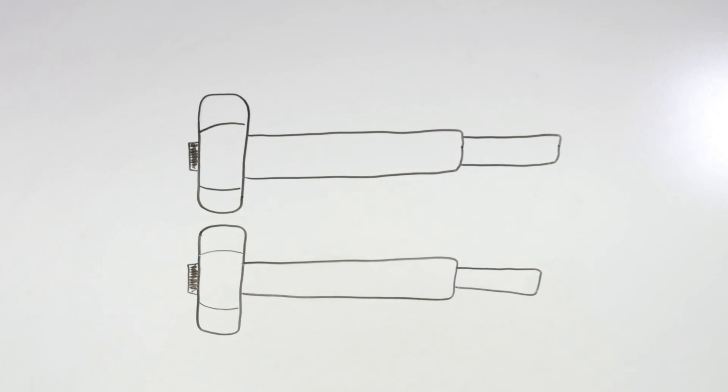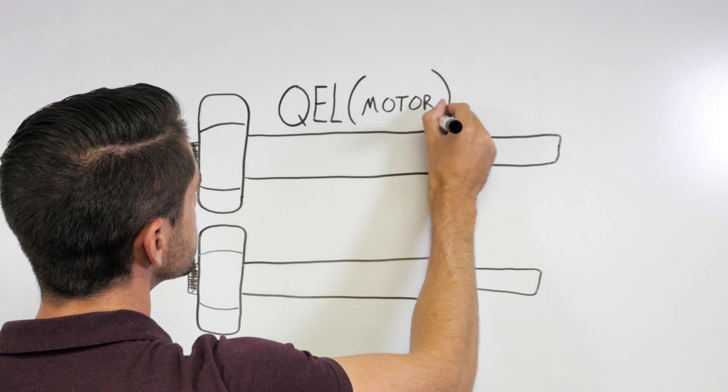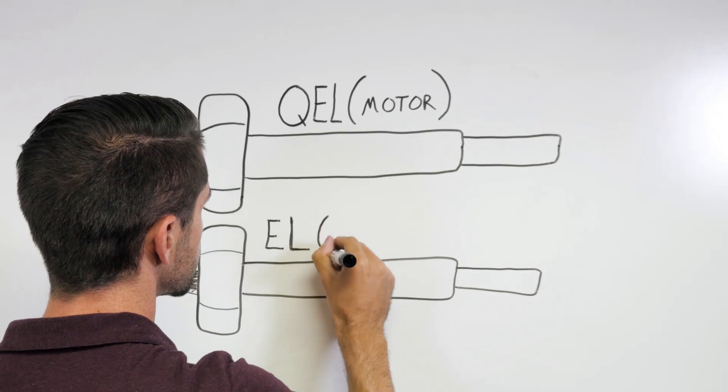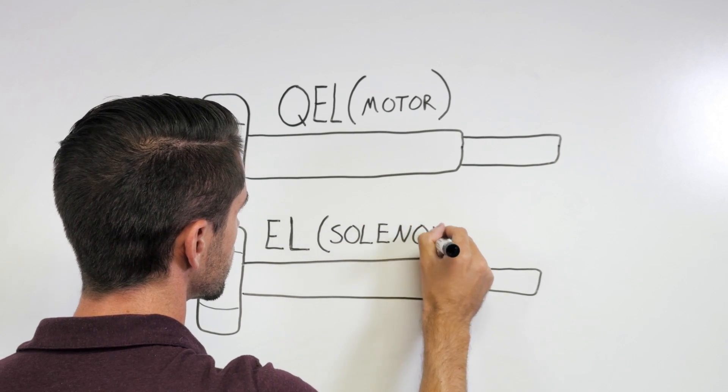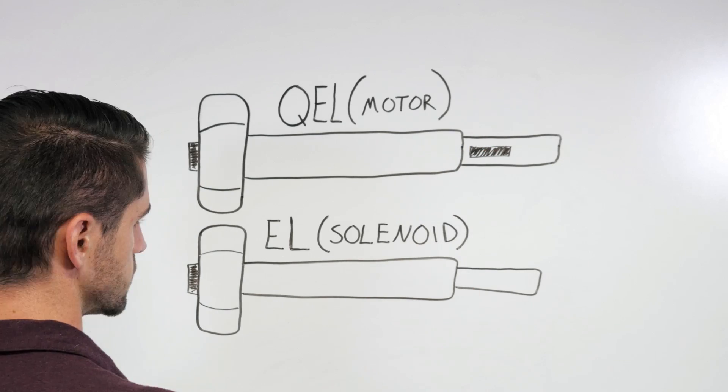Specifically, Von Duprin calls their electric latch retraction EL or QEL. An EL device has a solenoid that electromechanically retracts the latch bolt, whereas the QEL device has a motor.